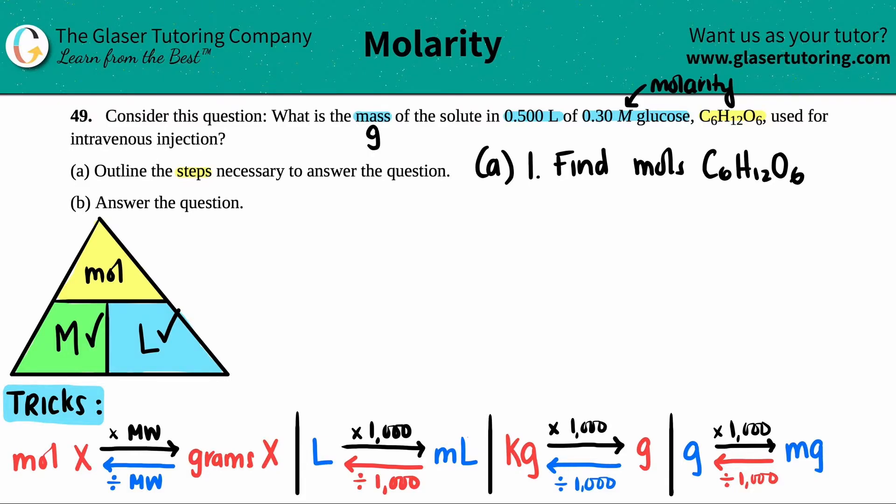Then what would be the second step? Since we found the moles, is that what the question's asking for? No. The question's asking for what's the mass in grams. If we found out a mole of something, I could always go from a mole of that compound or element to the grams of the same compound or element. And that's what they're asking for. They're asking for grams.